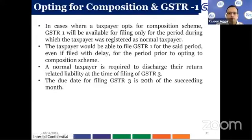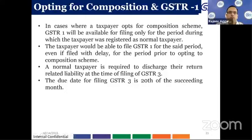If a normal taxpayer opts for the composition scheme, GSTR1 will be available for filing only for the period during which they were registered as a normal taxpayer. The taxpayer will be able to file GSTR1 for that period even if filed with delay, i.e., for the period prior to opting into the composition scheme.